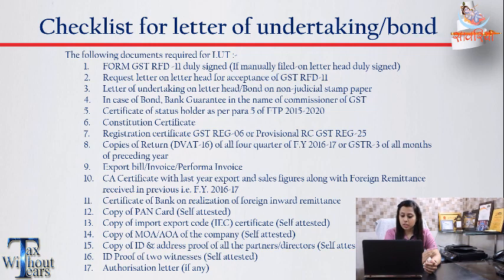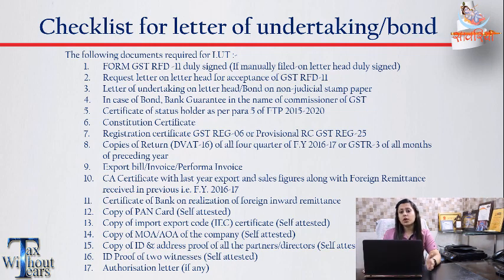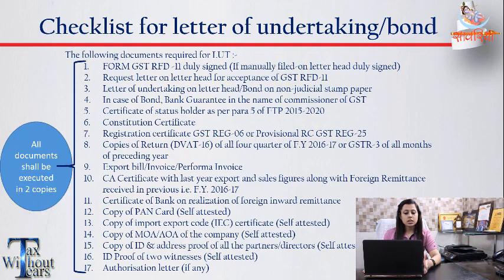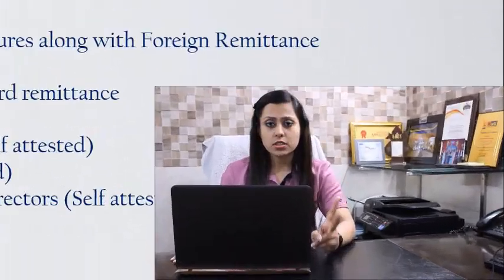Further documents include: a CA certificate with last year's export and sales figures, certificate from the bank on realization of foreign inward remittance, and other KYC documents. If you are sending another person on your behalf, include an authority letter. You must take all these documents in two copies — one will be kept with the proper officer, and on the other set you will get the receiving.